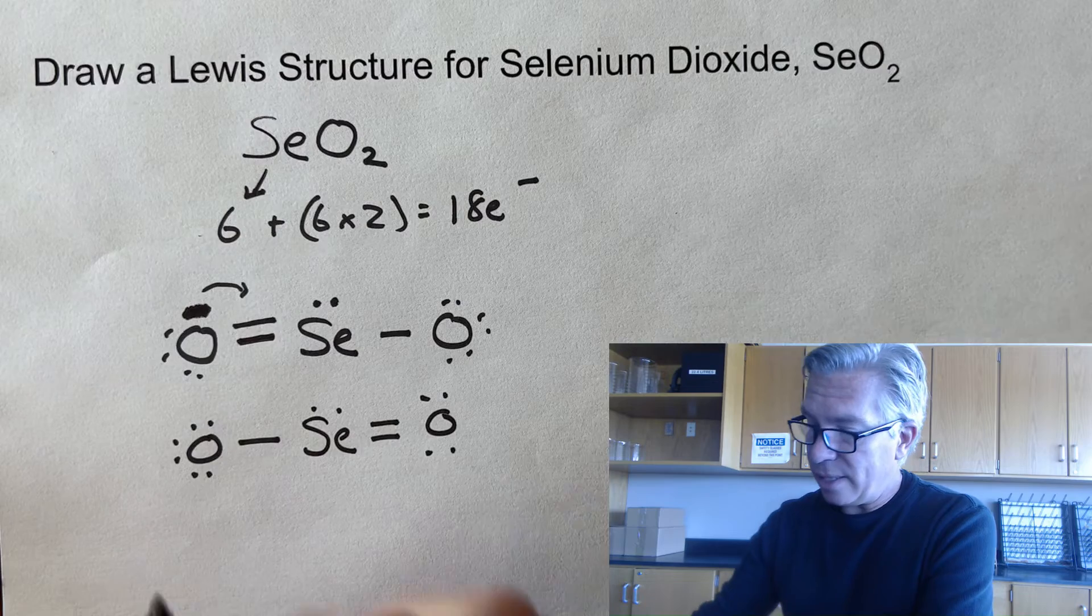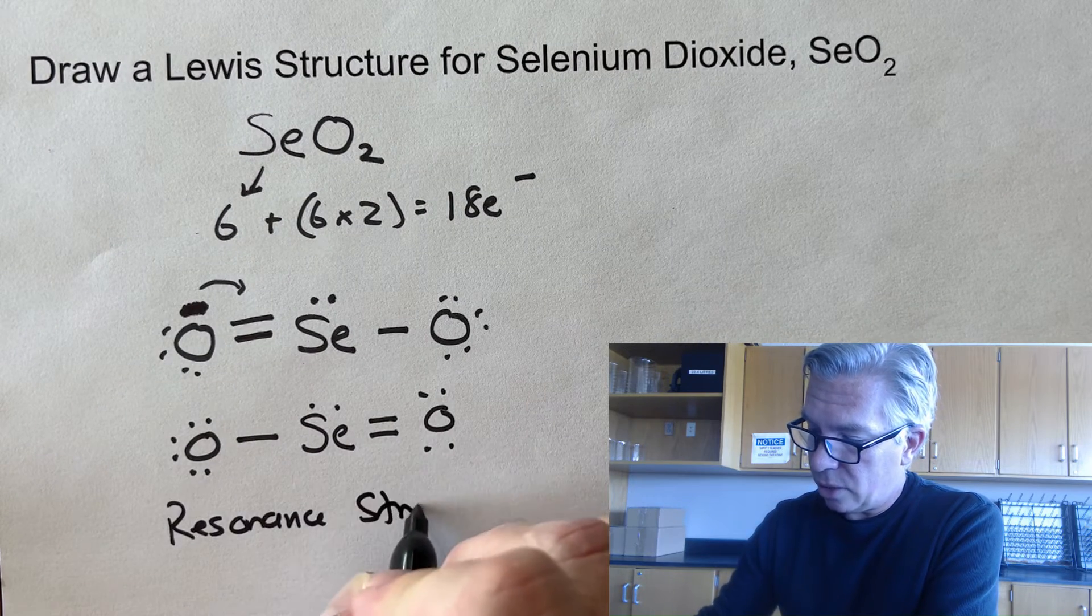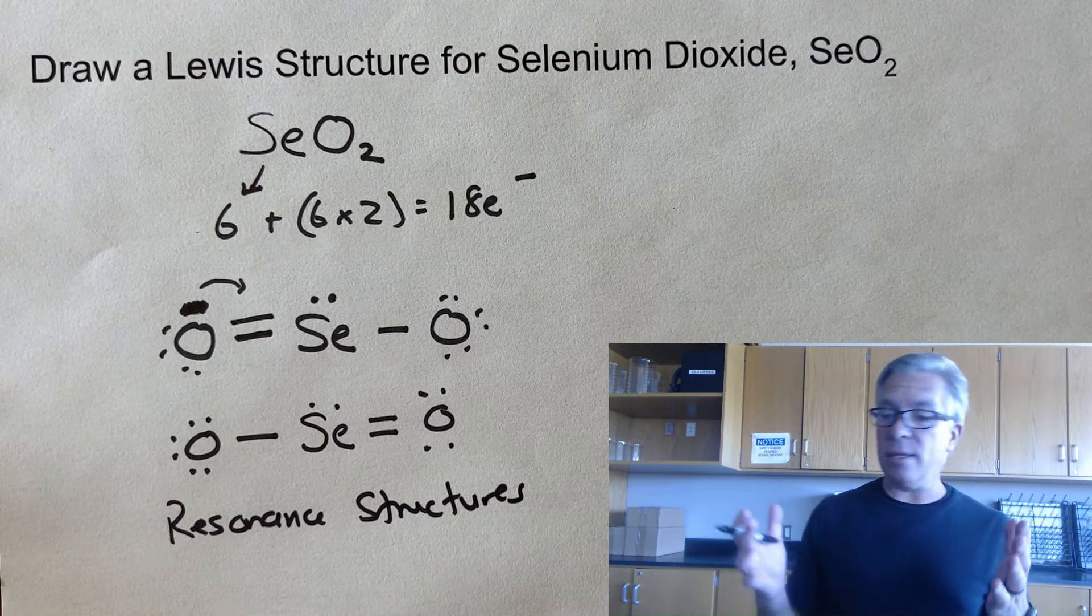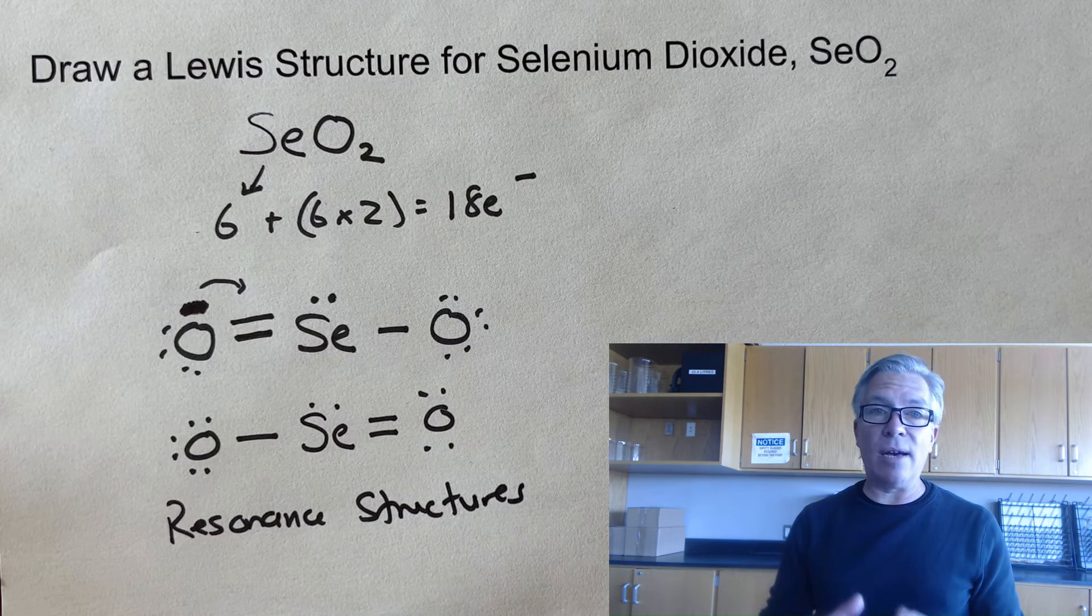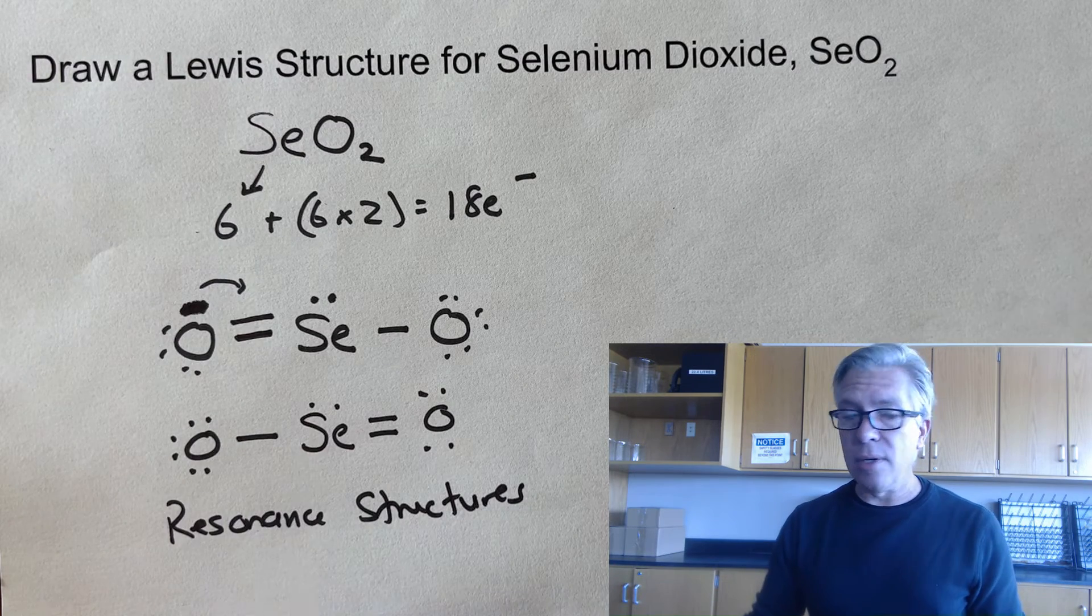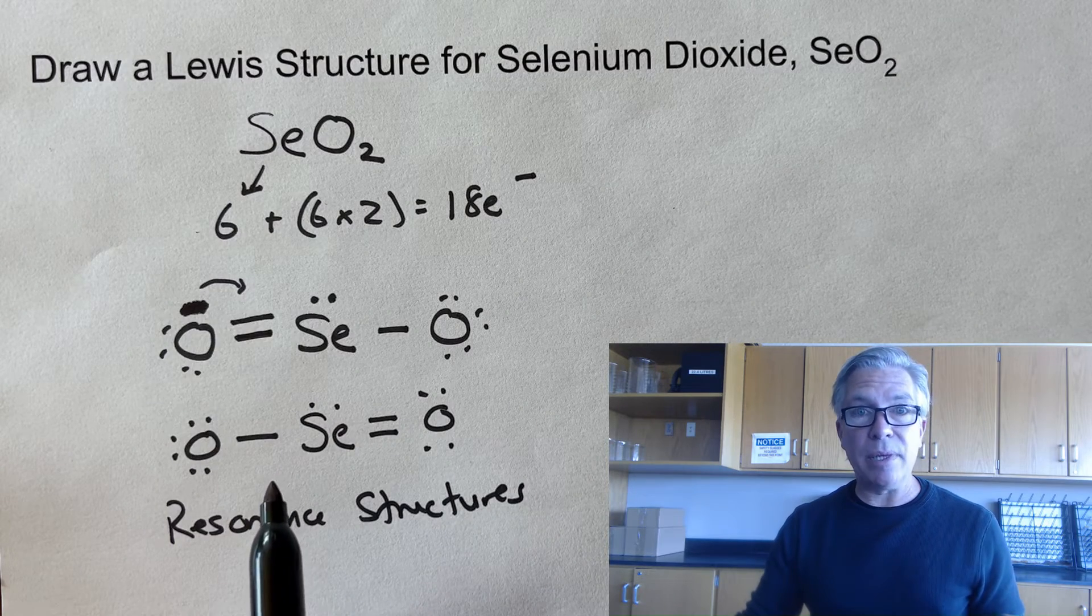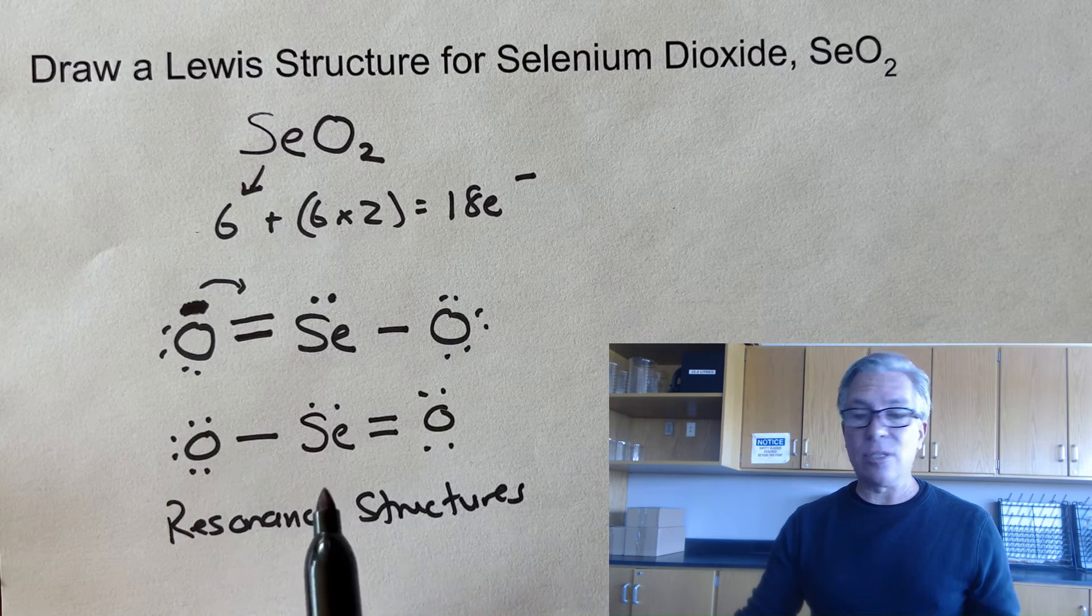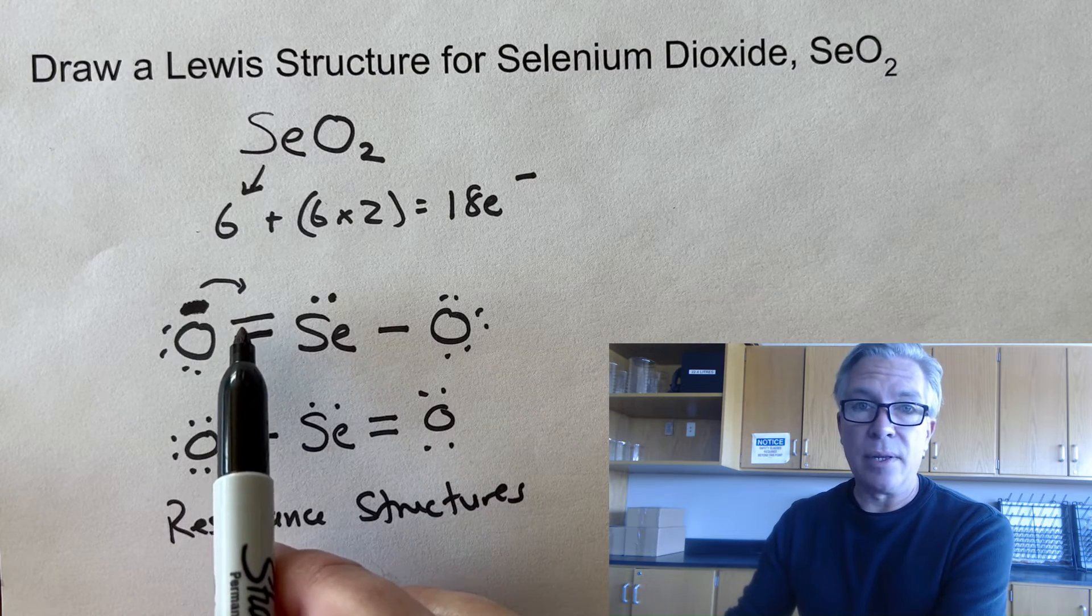And in fact, both of those are what we would call resonance structures of each other. Resonance structures. And resonance structures happen when you have a double bond that needs to be added, but there's more than one possible place that it could be. Or maybe you have doubles and triples that can be in different places and still satisfy the octet rule. And so it's actually more appropriate for us to draw both of them because they both are valid. And in fact, the selenium dioxide actually probably exists in both of them almost simultaneously. The electrons from one, they're mobile.